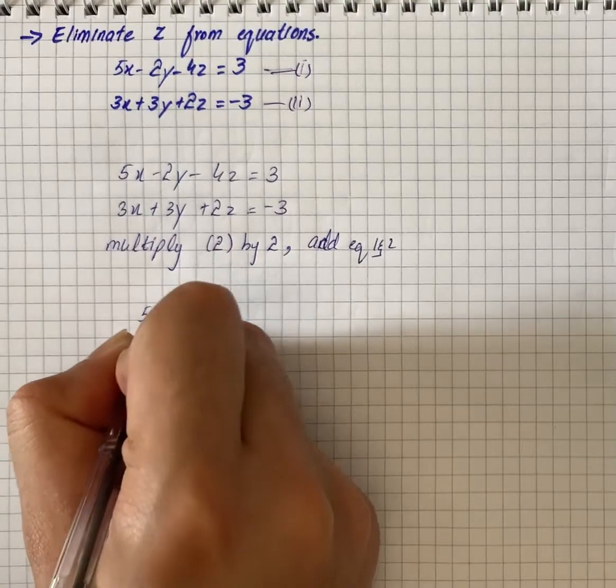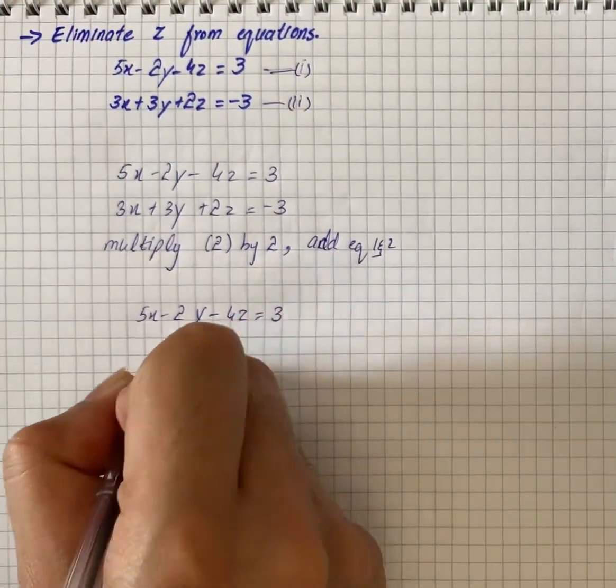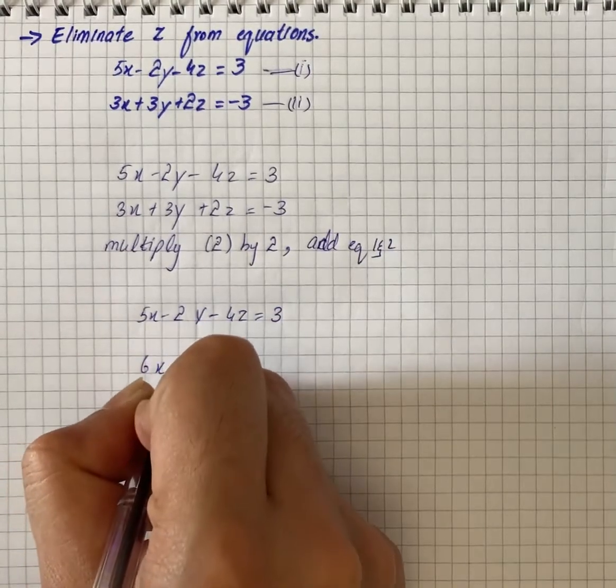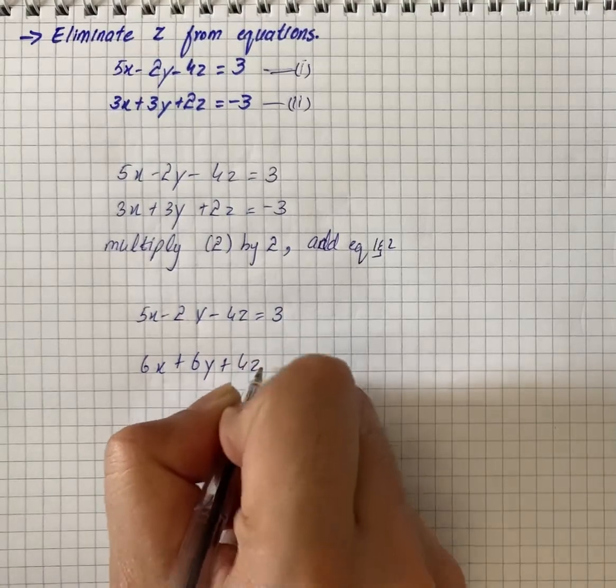So it will give us 5x minus 2y minus 4z is equal to 3, and then 6x plus 6y plus 4z equals to minus 6.